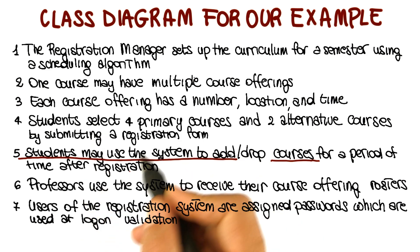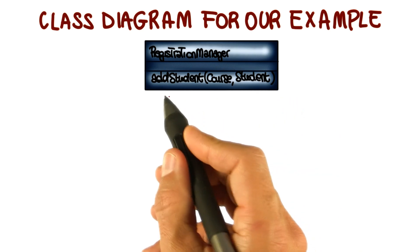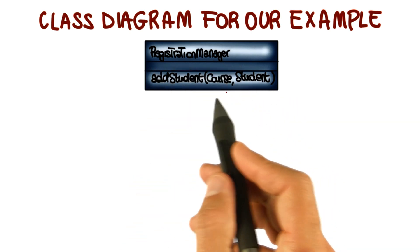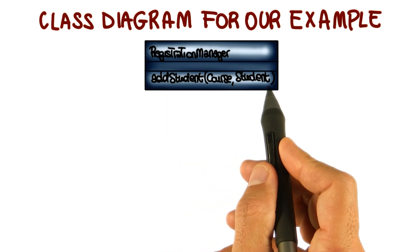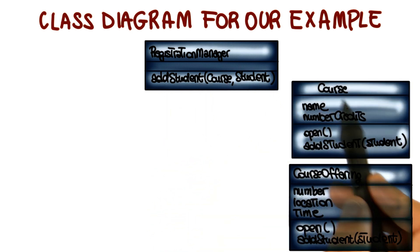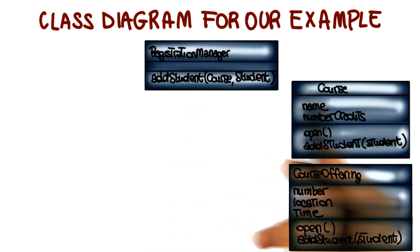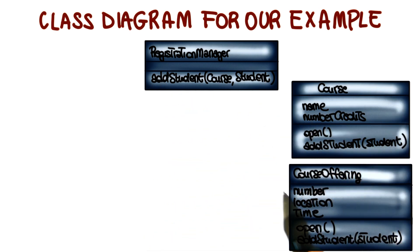So let's see what this means for our example. This might mean, for example, if we focus on the registration manager, that there should be an operation in the registration manager that allows me to add a student to a course. And this in turn means that both course and course offering should provide a way to add a student. And therefore, I add this corresponding operation to the registration manager, to the course, and to the course offering.